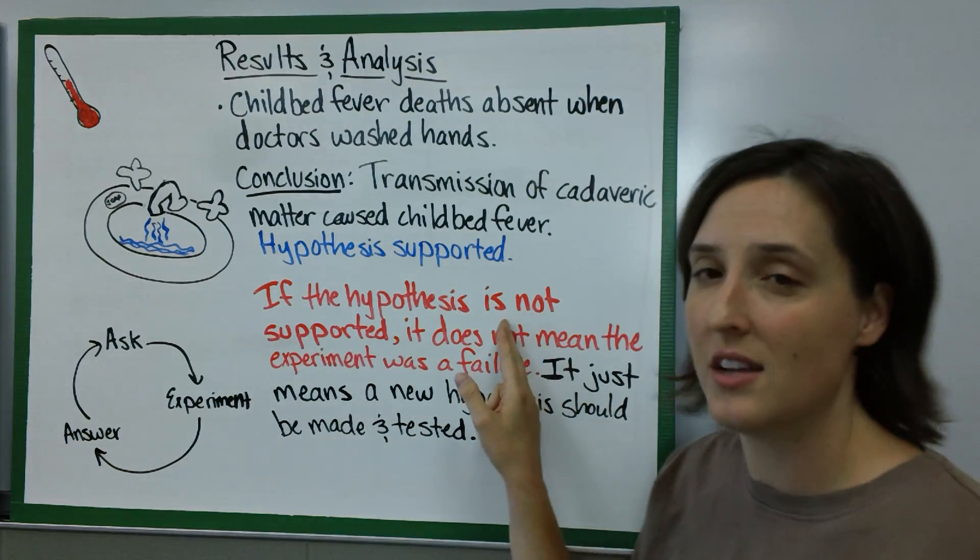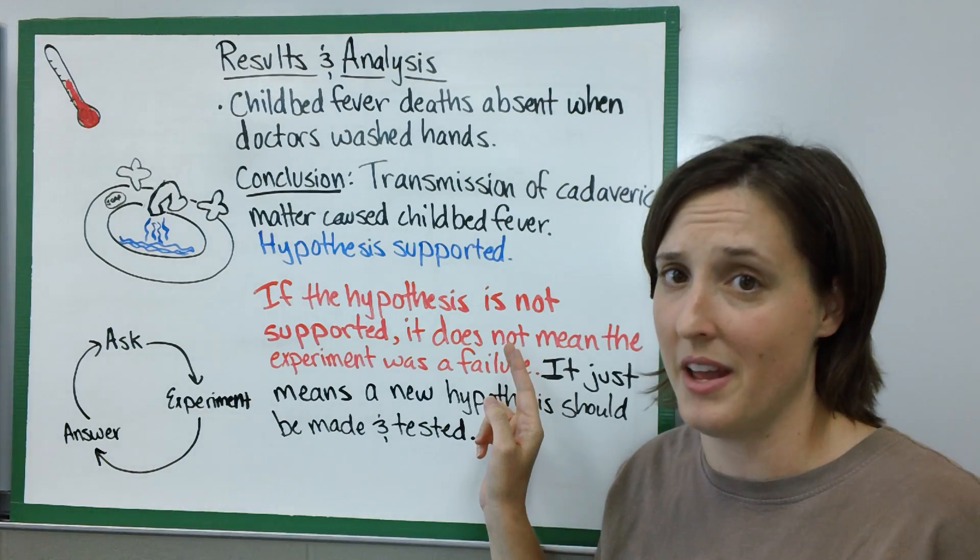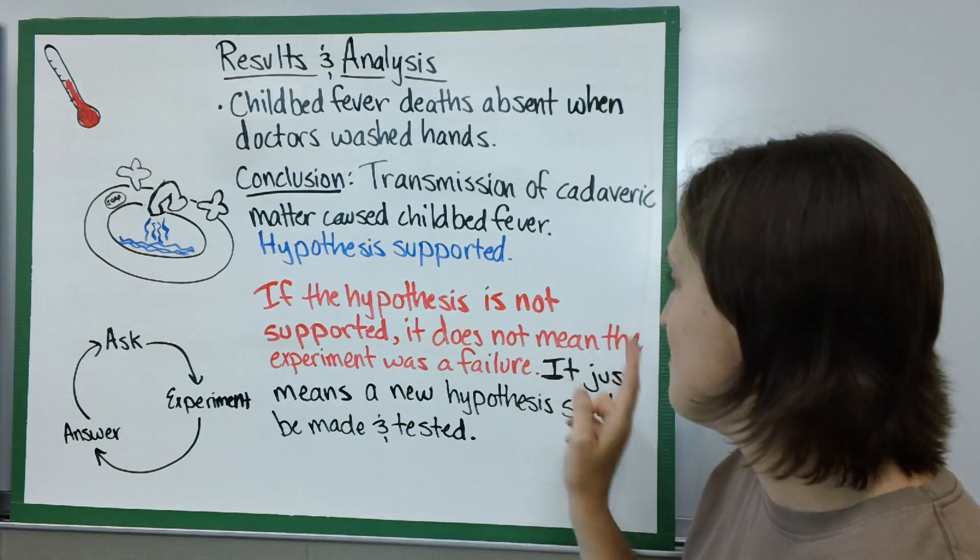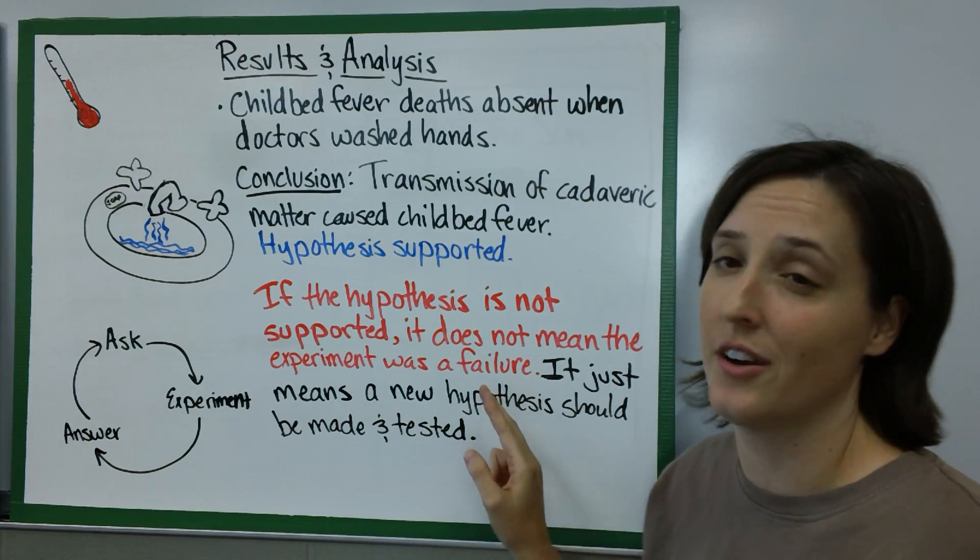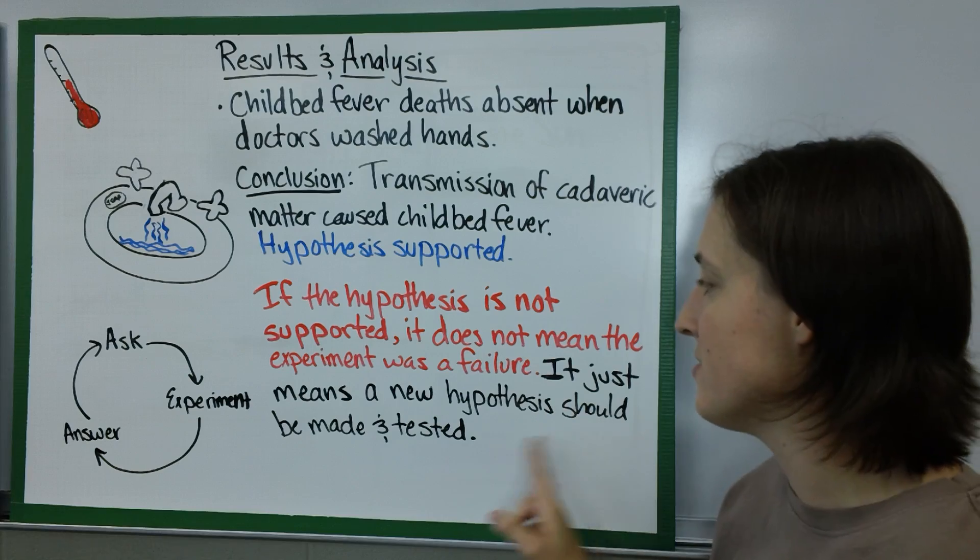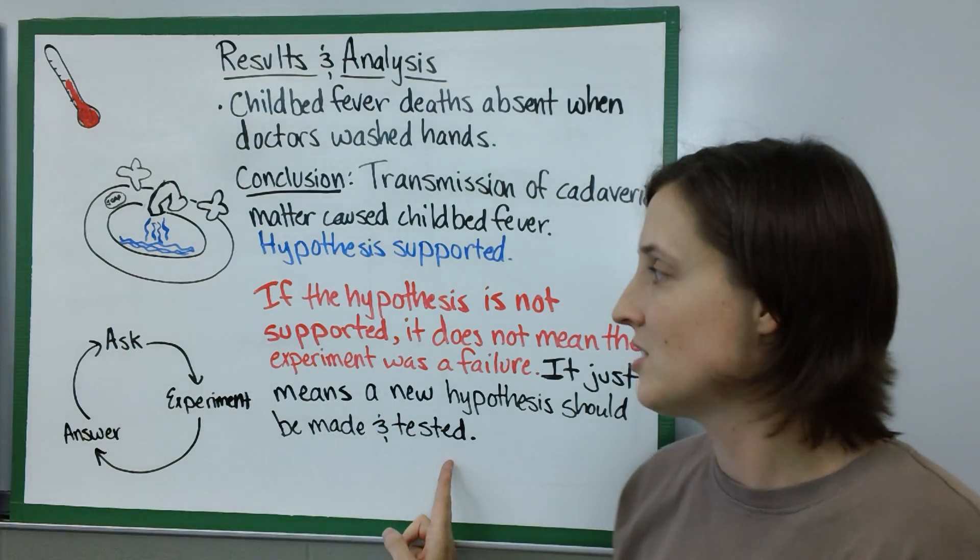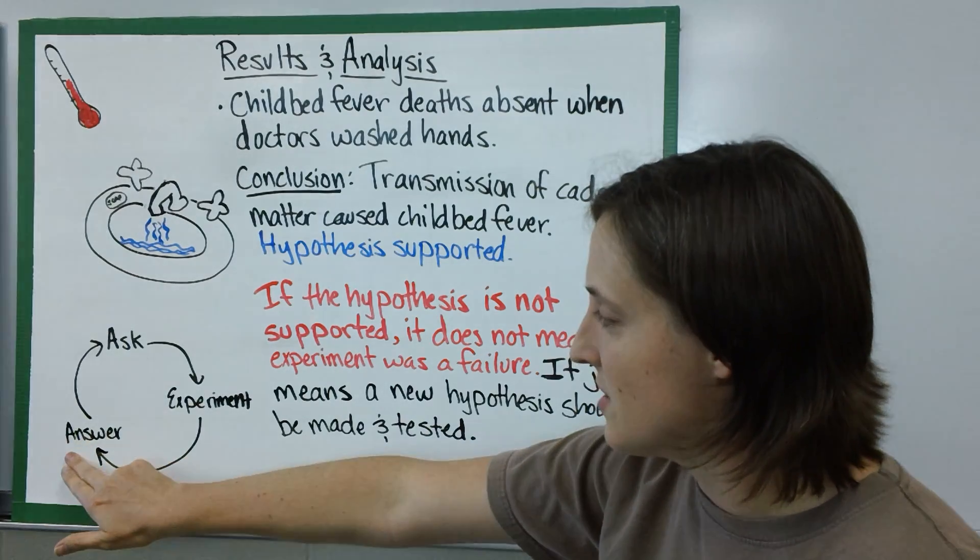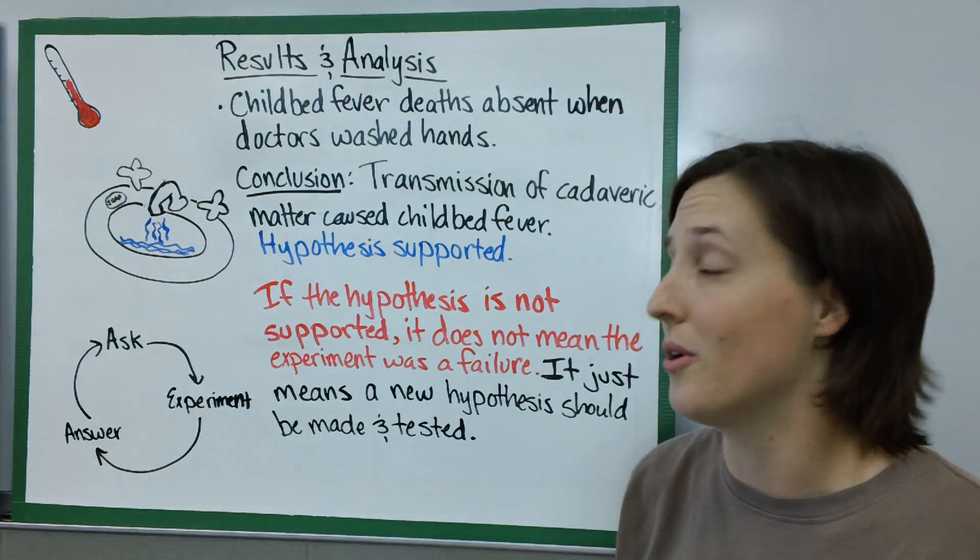If the hypothesis is not supported—say you're doing an experiment and your hypothesis isn't supported—it's not the end of the world. It doesn't mean the experiment was a failure because you still learn something from it. It just means that a new hypothesis should be made and tested. You can ask a question, do an experiment, find an answer, ask another question. It's not the end of the world.